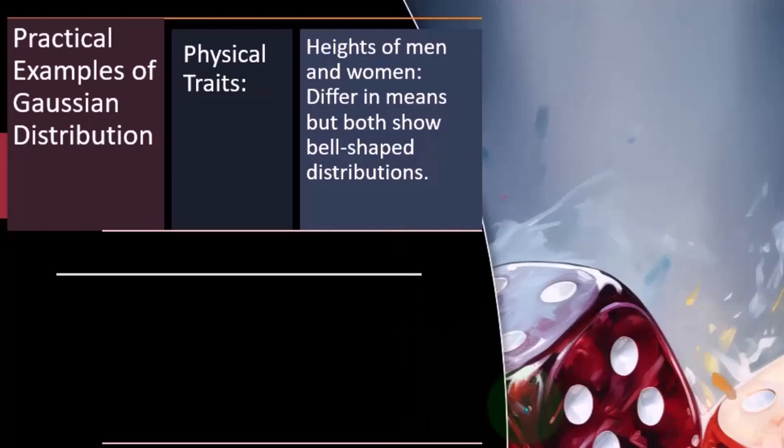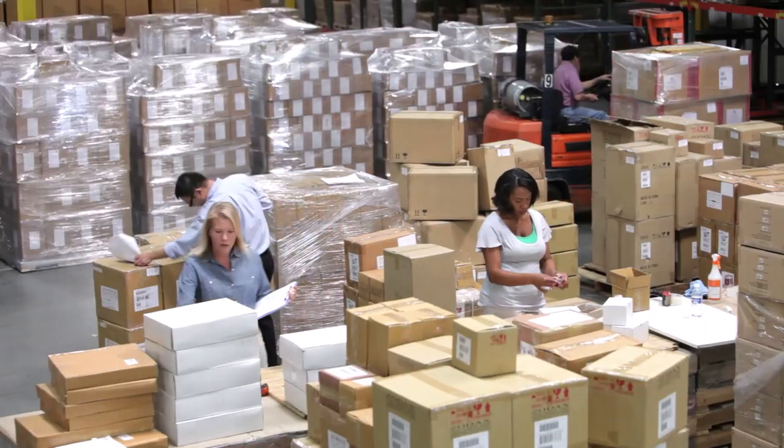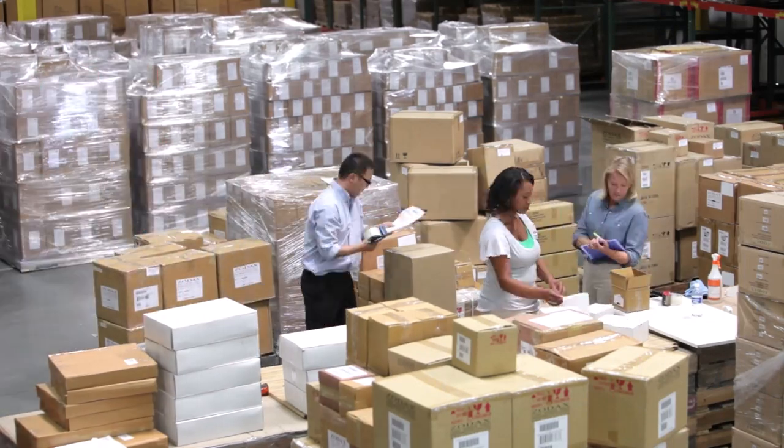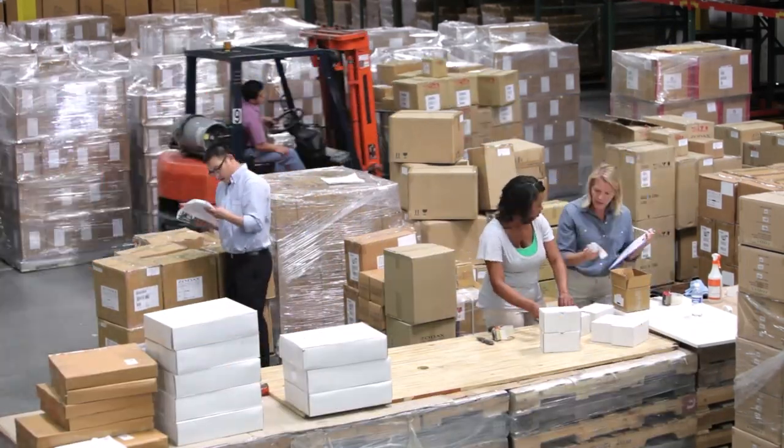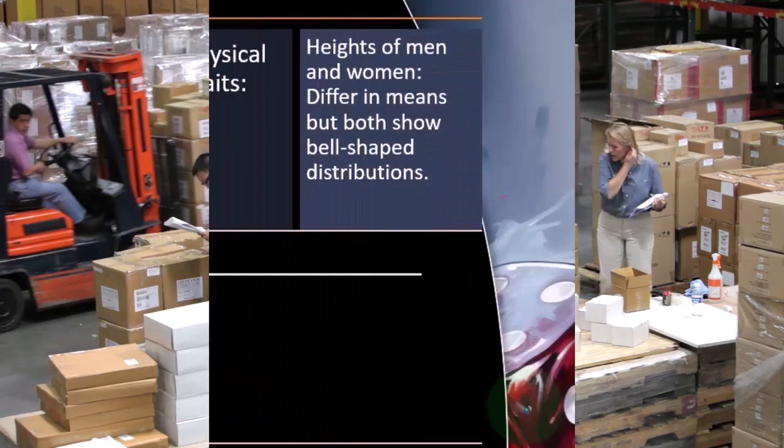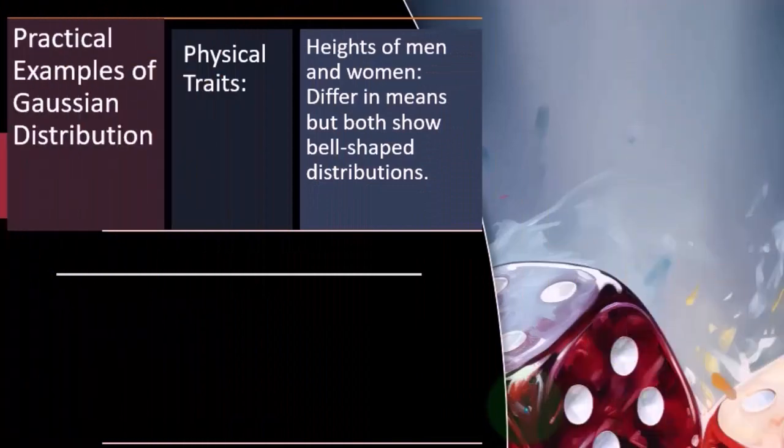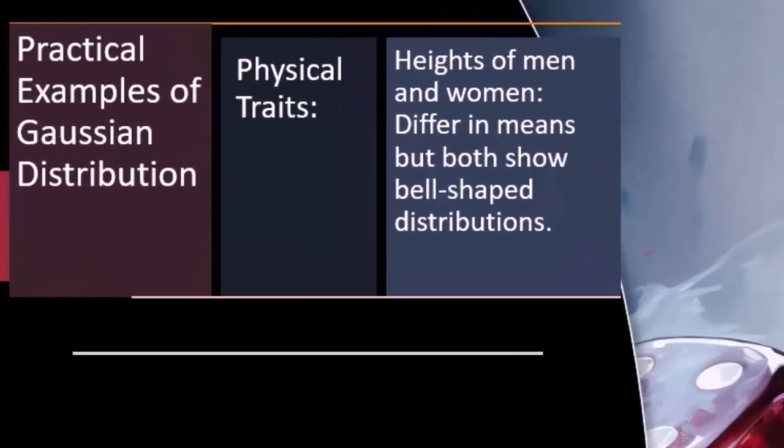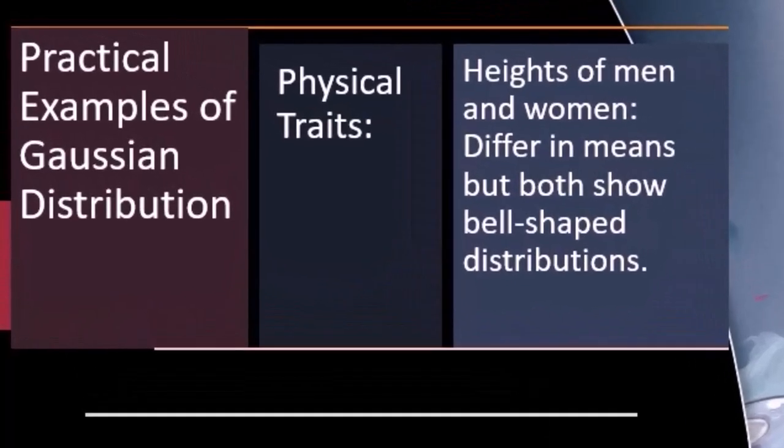So if you think about a bell-shaped distribution, you would think that the spread, the standard deviation, would be somewhat similar, but it would be shifted on the man's side a little bit to the right, because the mean, the middle point, would be a little bit to the right. So you'd have similar kind of bell-shaped curves that would have similar distribution in terms of standard deviation, but the men's curve would be a little bit to the right.